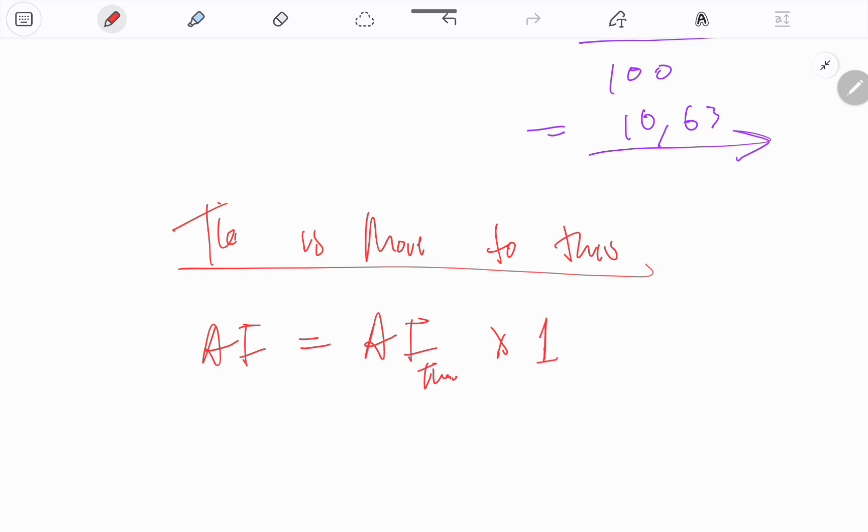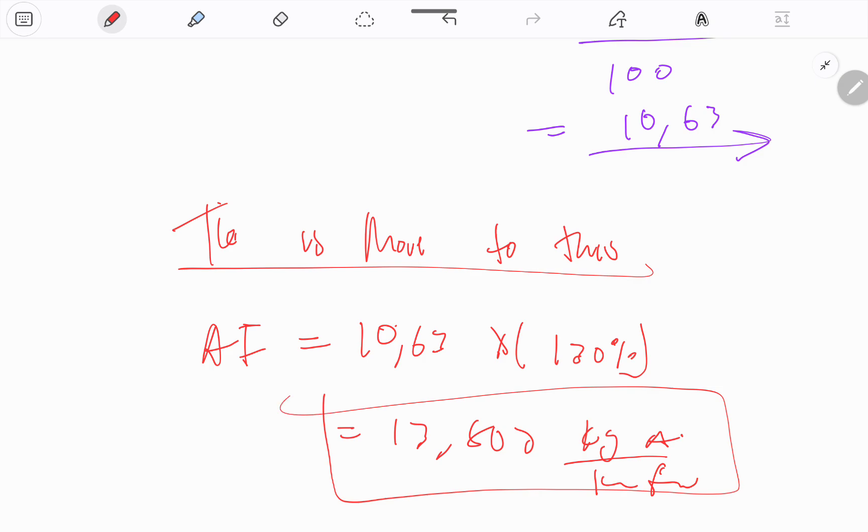With excess, we literally should have one but we have 30% more, so we have 130%, or 1.3. Multiply 10.63 by 1.3 and I'm getting 13.803 kg of air per kg of fuel.